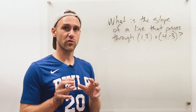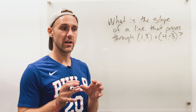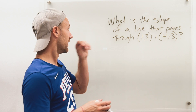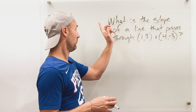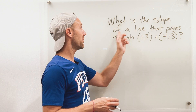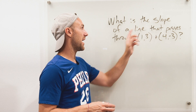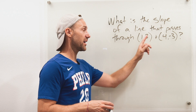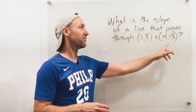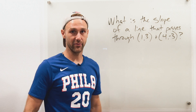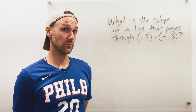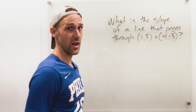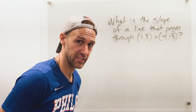Give this a shot and try to get it right, and then we'll work it together. It says: what is the slope of a line that passes through (1, 3) and (4, -3)? That's a good one — give it a shot and then we'll work it together.